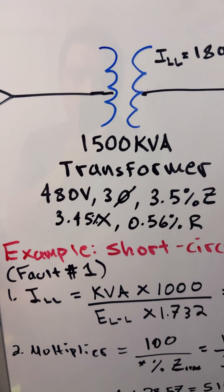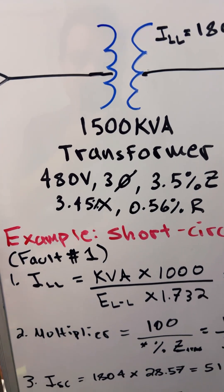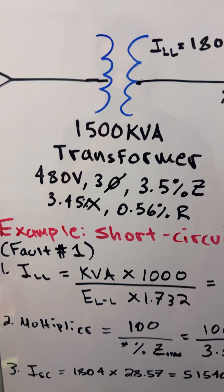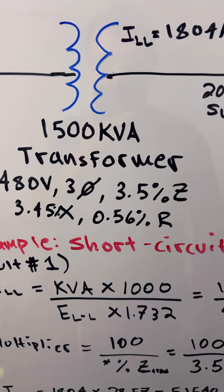We have a 1500 kVA transformer, 480 volts, three phase, with 3.5% impedance, 3.45% reactance, and 0.56% resistance.